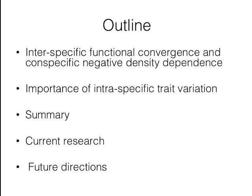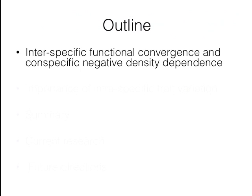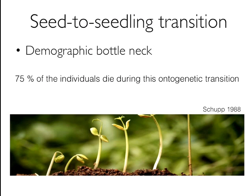For this first project, I was interested in evaluating differences across species in determining patterns of abundance, and I wanted to focus on the seed-to-seedling transition. The reason is that during this transition, a lot of mortality happens — it has been described as a demographic bottleneck. About 75% of individuals die during this transition. So understanding what drives variation in species abundance requires considering what is happening during this seed-to-seedling transition.